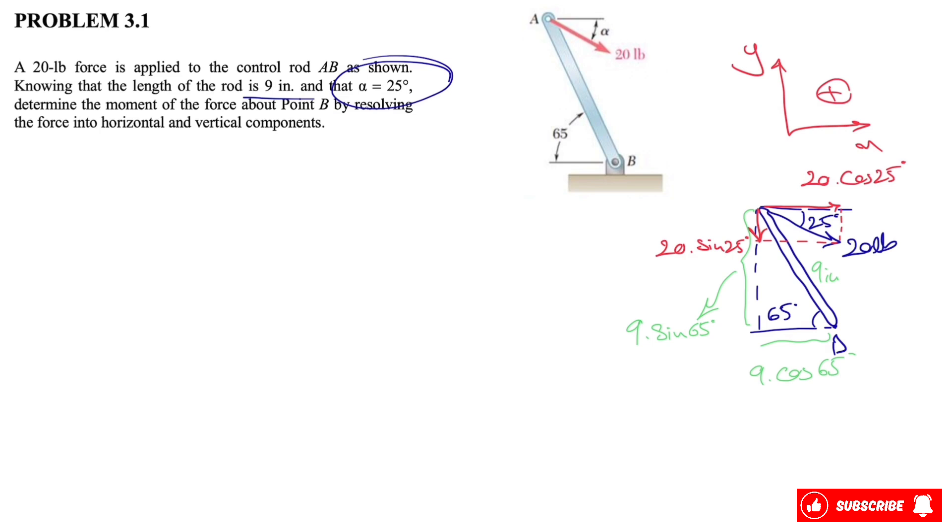For our moment, we are trying to find the moment about point B. We call clockwise positive as always. If we look at the x component of the 20 pound force, we'll see that it's going to make a clockwise moment, which means it will be negative.